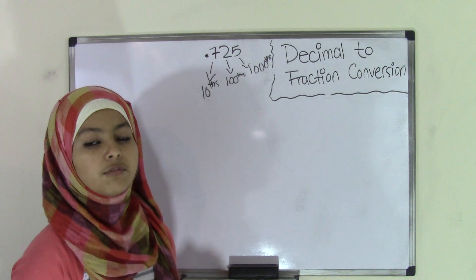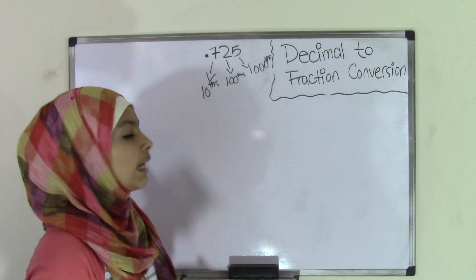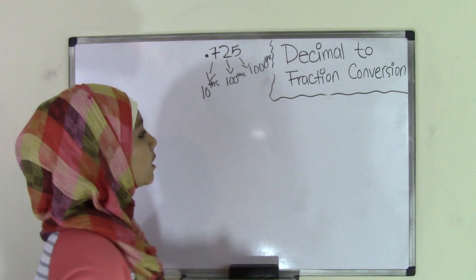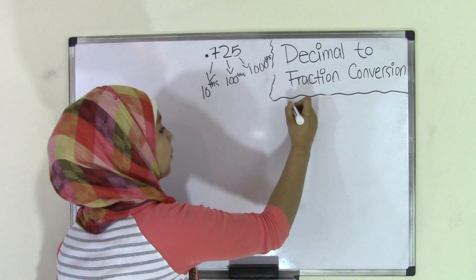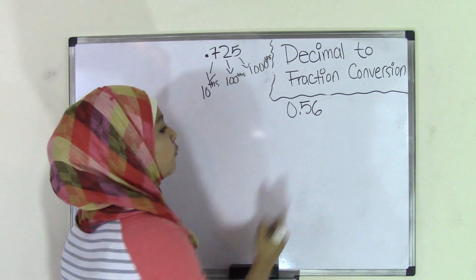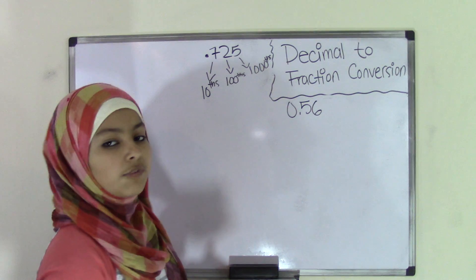And now that you have a good idea of what the decimal place values are, let's go on to our problem. So today I'm going to be using the decimal number 0.56.